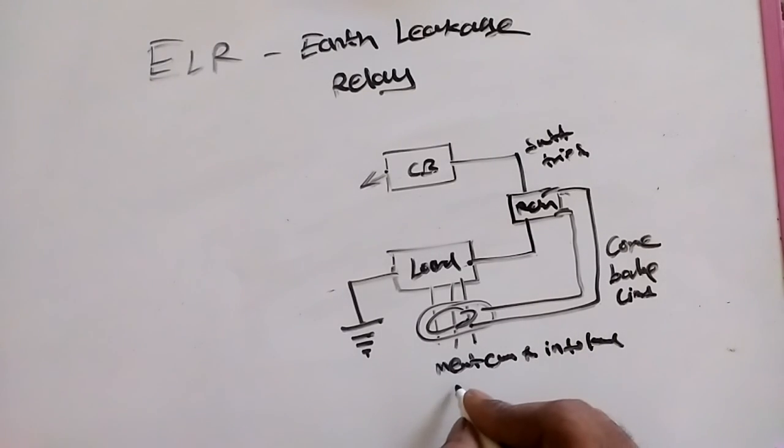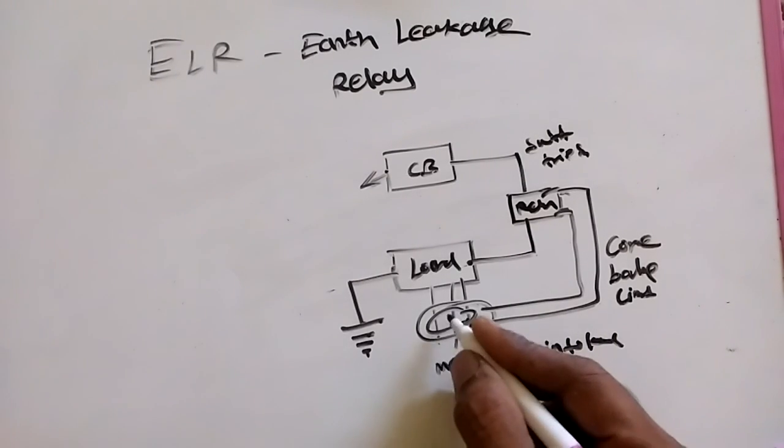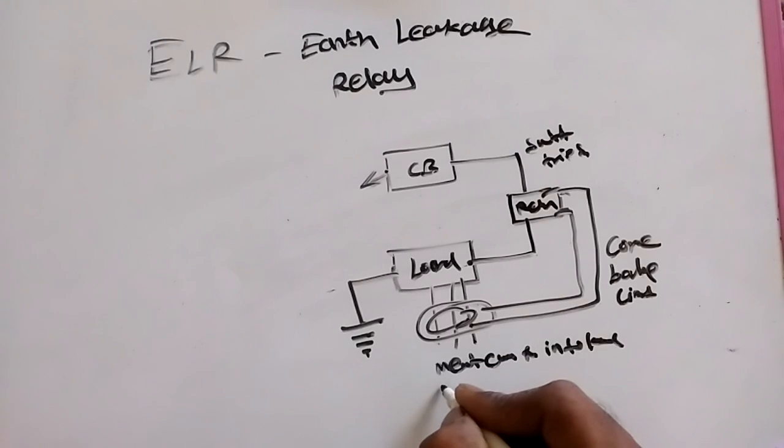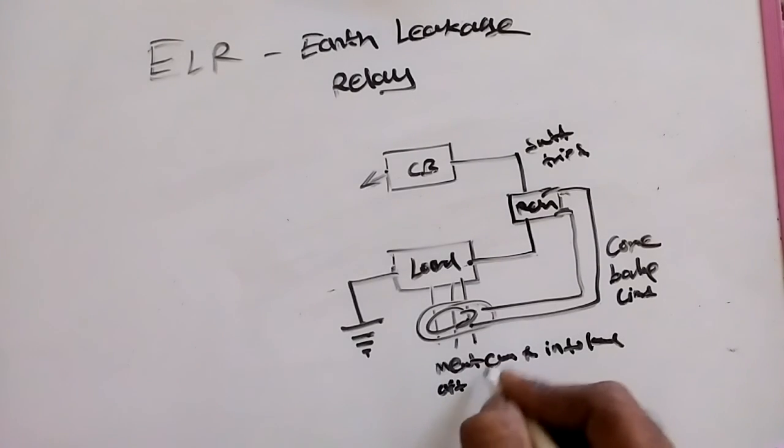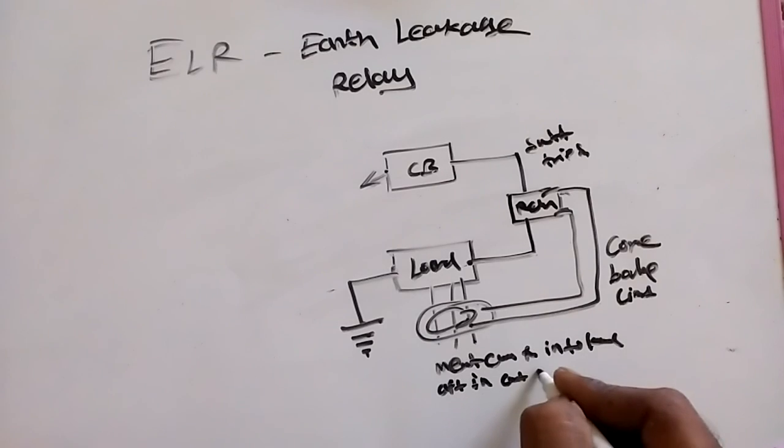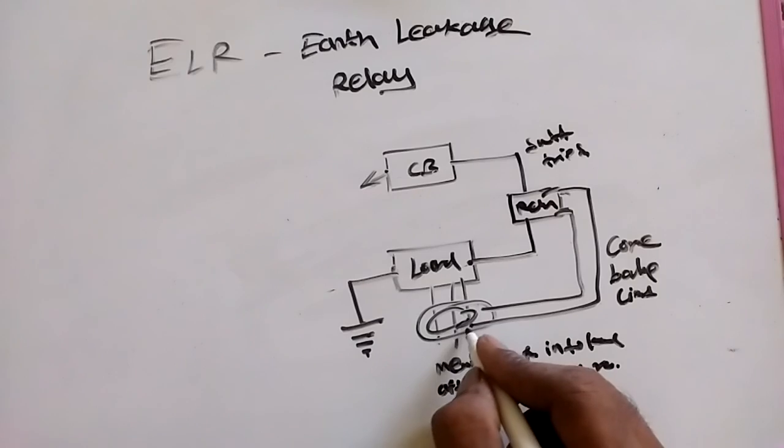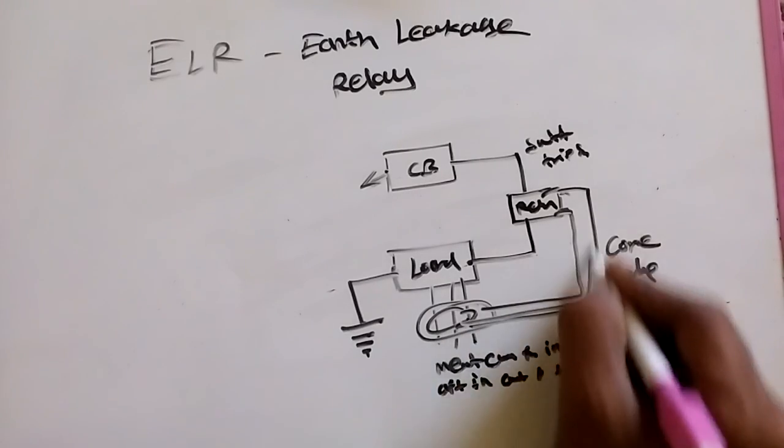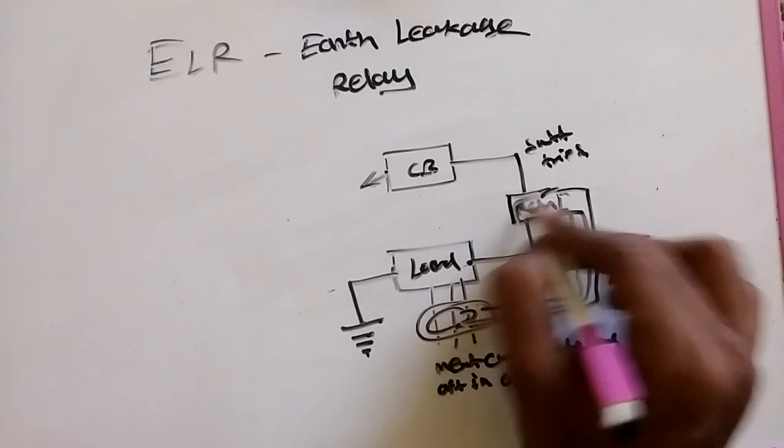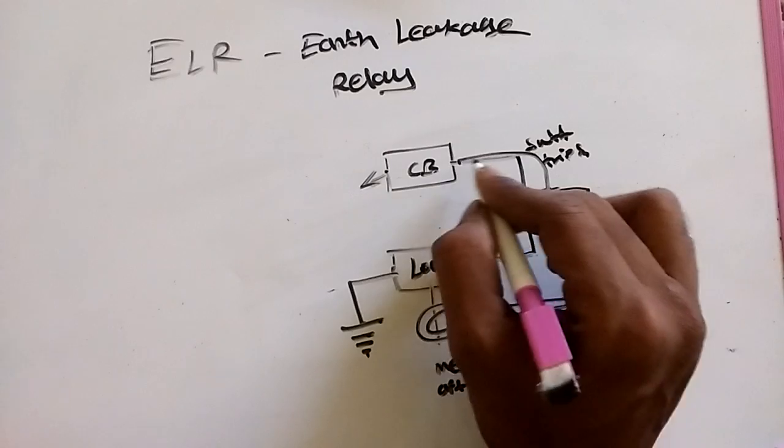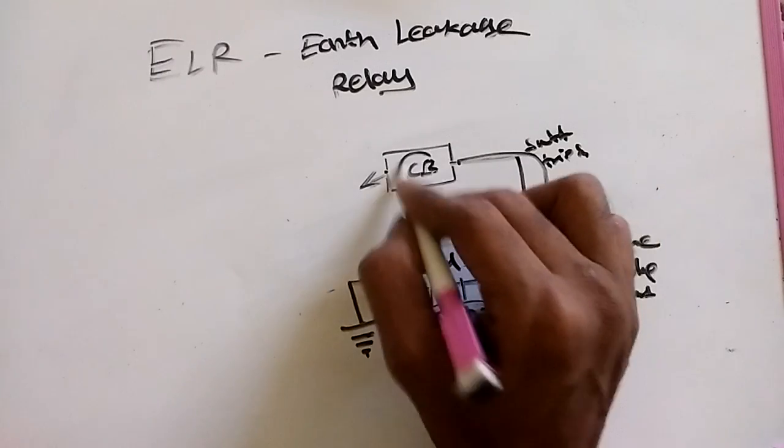If the current is higher in the system, then after the load utilizes current, it returns via neutral. If current does not return, the current is going to earth. That's why the CBCT sends a signal to ELR, then ELR sends a signal to shunt trip. The shunt trip trips the CB.